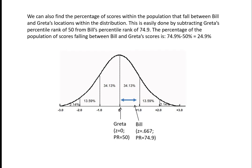We can also find the percentage of scores within the population falling between Bill and Greta's locations in the distribution. This is done by subtracting Greta's percentile rank of 50 from Bill's of 74.9. So 74.9% minus 50% gives us 24.9%. In other words, 24.9% of the distribution is assumed to fall between Bill and Greta's locations.